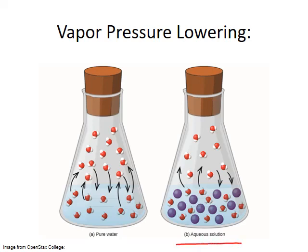Now on the right, there's a non-volatile solute added to the flask. The solute particles are purple in this solution. They're non-volatile in this example, which means that they don't evaporate. So the only particles we find in the vapor phase above the solution are going to be for the solvent, for water. Notice that there are fewer water molecules above the surface of the liquid, because there are fewer water molecules at the surface able to evaporate. We've replaced some of those water molecules with non-volatile solute particles. The net result is that the number of gas particles above the liquid, and therefore the vapor pressure, drop.